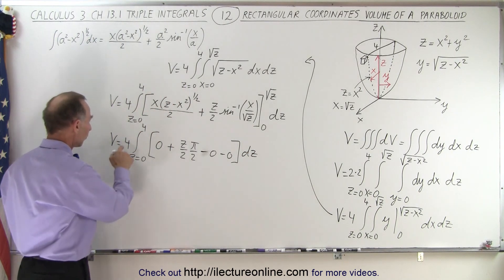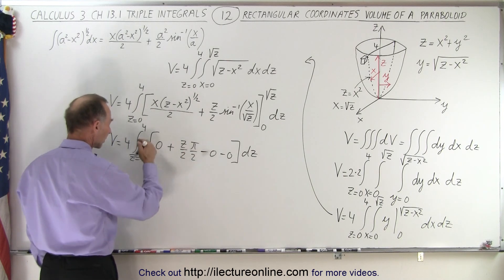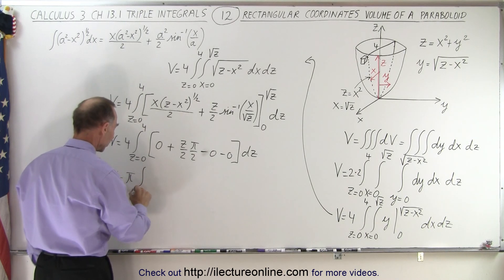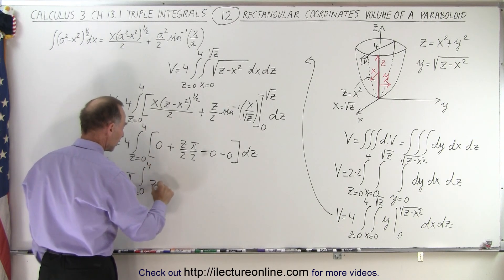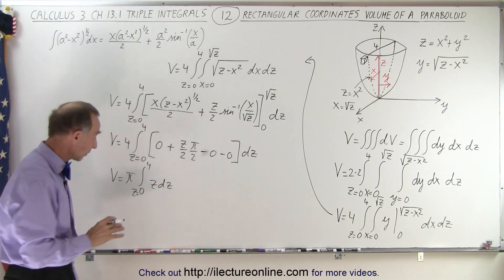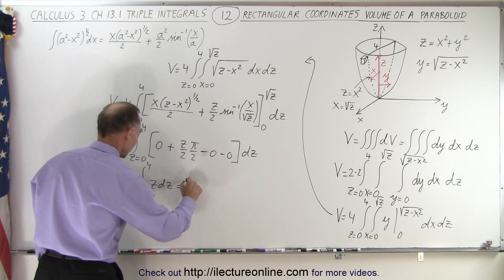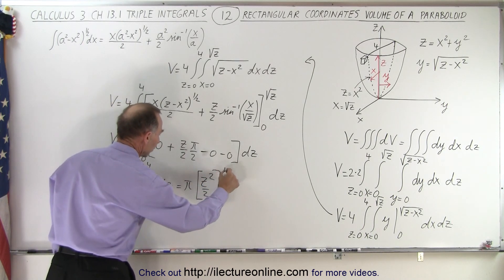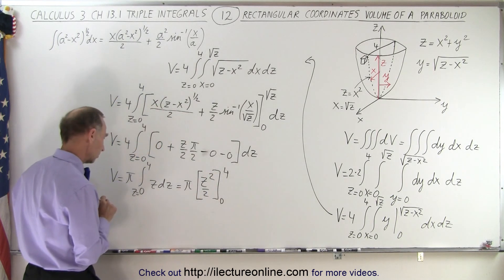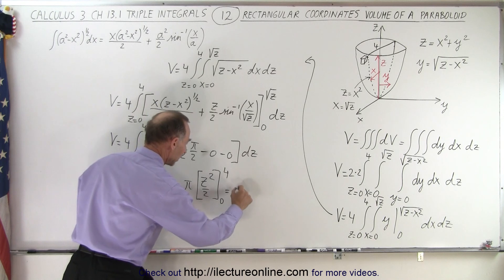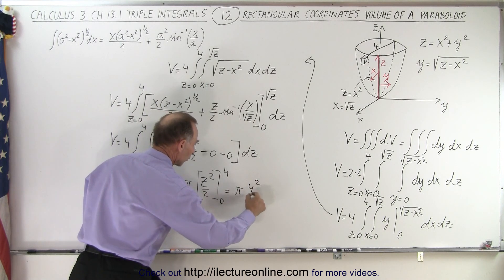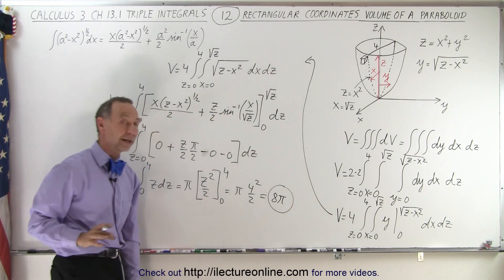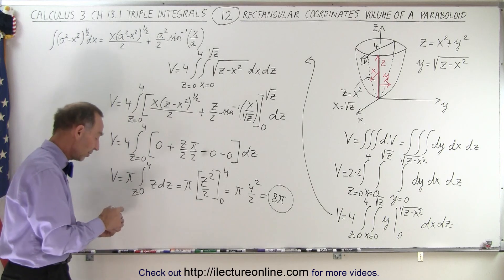All right so 4 divided by 4 is 1 times pi that can come outside the integral sign, so this is equal to pi times integral from z equals 0 to 4 of z dz. So now we're ready to integrate that. So this is equal to pi times z squared over 2 from 0 to 4. Correct yes. All right so this is equal to pi times 4 squared over 2 which is equal to 16 divided by 2 or 8 pi.